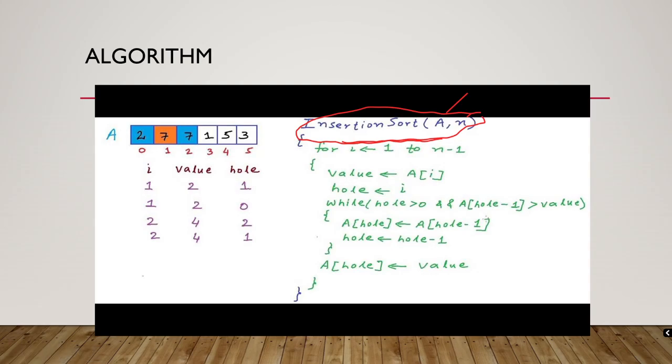And while hole greater than 0 and A of hole minus 1 is greater than the value, then I have to swap. A of hole will take the place of A of hole minus 1, and hole will take hole minus 1. This is where I have taken the swapping. If it's not going to swap, then value will be placed in A of hole.